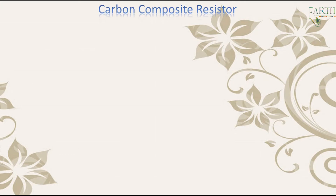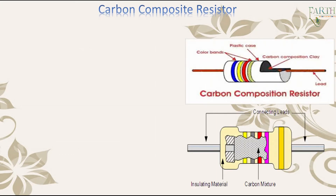Carbon composite resistor. They can do that by adding tiny components called resistors. A resistor is a little package of resistance — wire it into a circuit and you reduce the current by a precise amount. From the outside, all resistors look more or less the same. Resistors like this are much cheaper to make and are called carbon film.